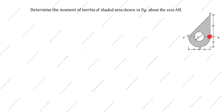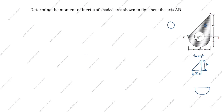We need to find the moment of inertia, and we will split the composite shape into three parts. The first one is a triangle, the second one is a semicircle, and the third one is a circle. The overall dimension shown is 40 plus 40 equals 80, so this distance is 80.